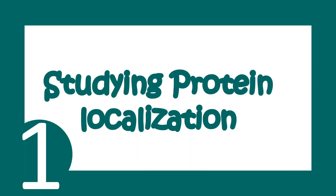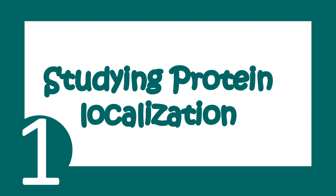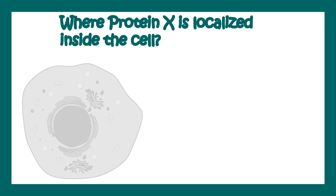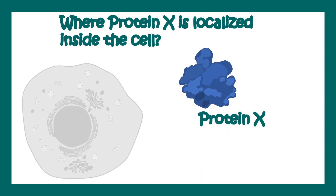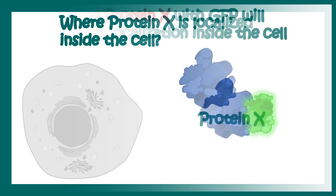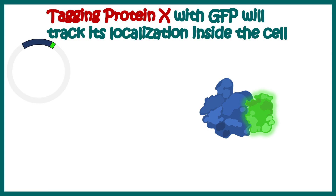Let's study how tags could be useful to understand subcellular localization of the protein. Let's say we want to ask whether our protein X is localized inside the nucleus, or Golgi, or wherever in the cell. How do we ask that question? In order to understand that, we have to tag this protein, and we can do that using an expression vector.